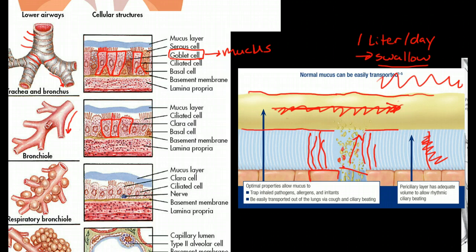They're still ciliated, and there are still some goblet cells, but the goblet cells are being - the further you go down, they're being replaced by clara cells. There's much less mucus down on the bronchioles, and the clara cells actually provide a defense role. They have phagocytic properties so they can engulf pathogens.